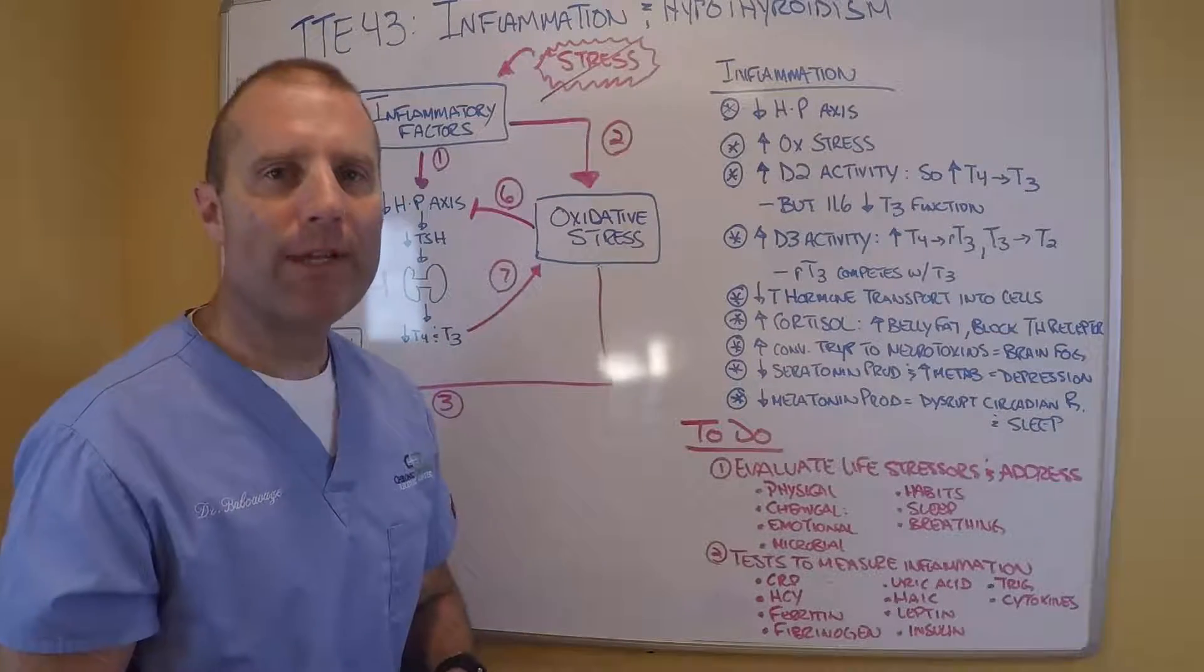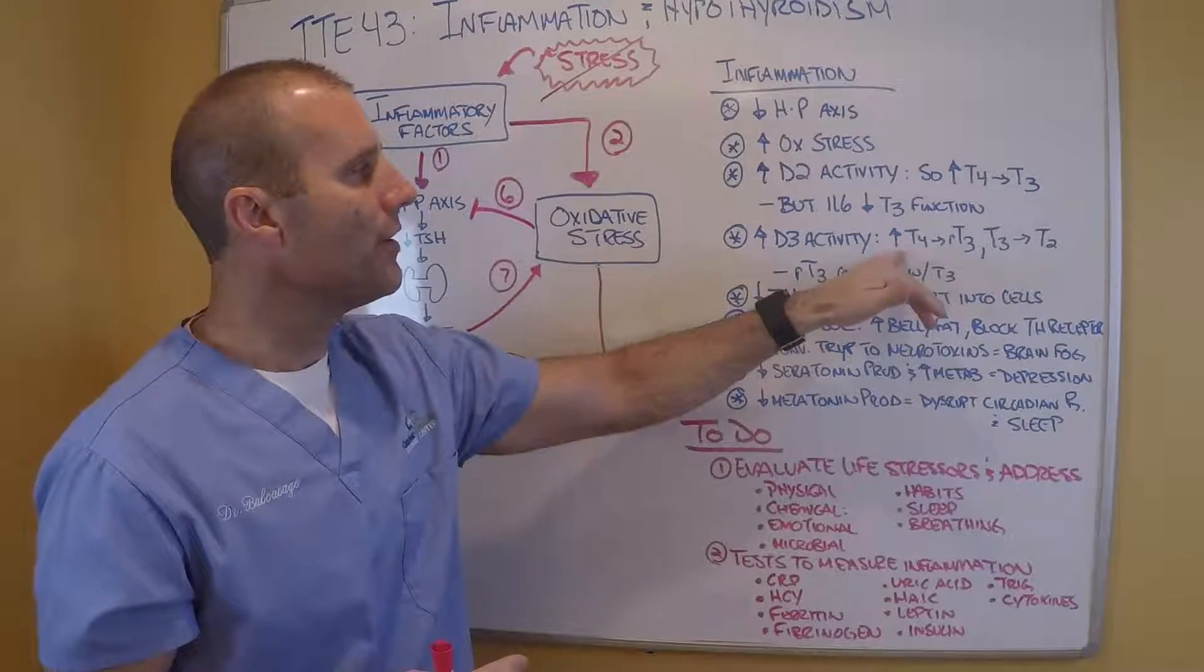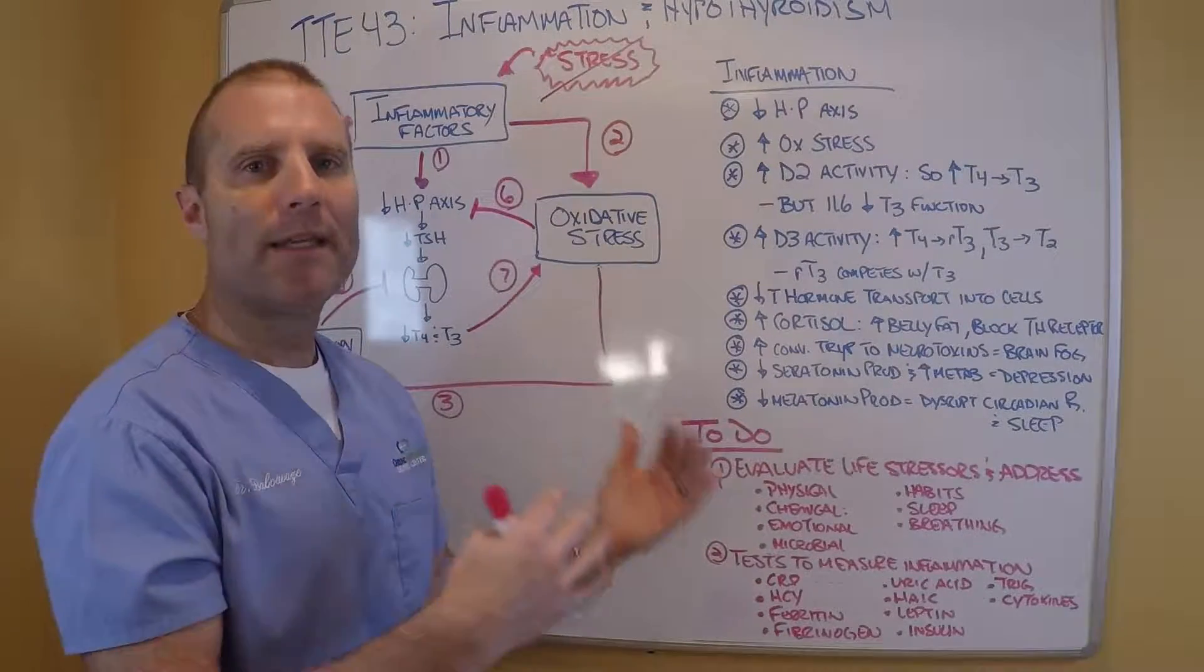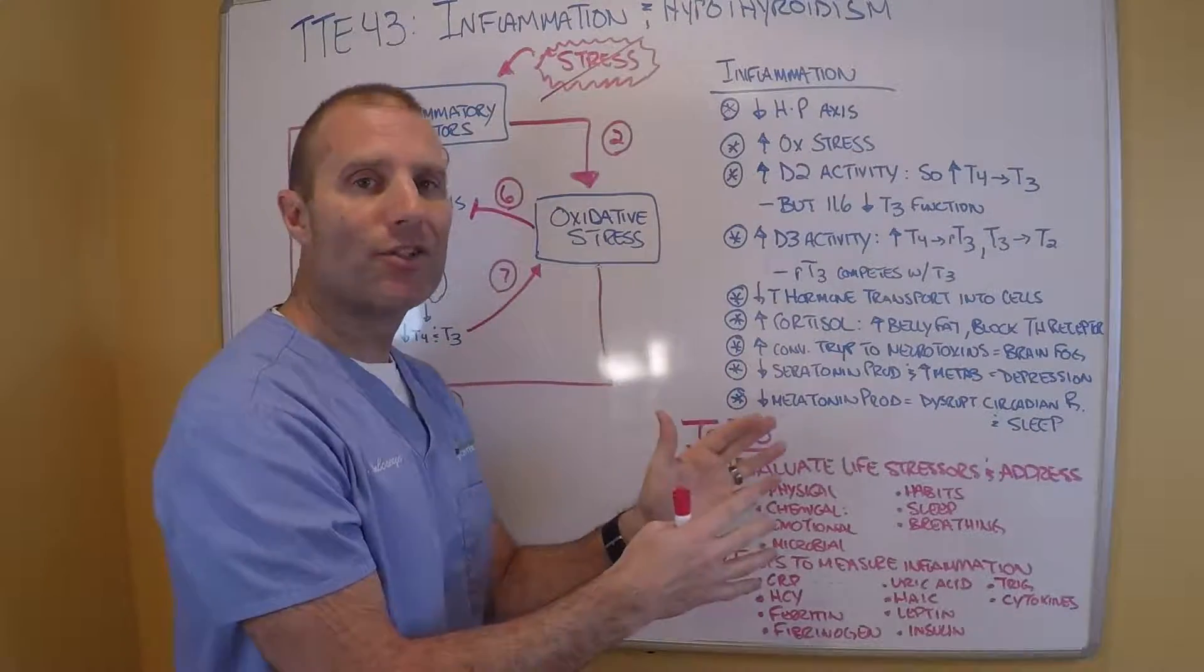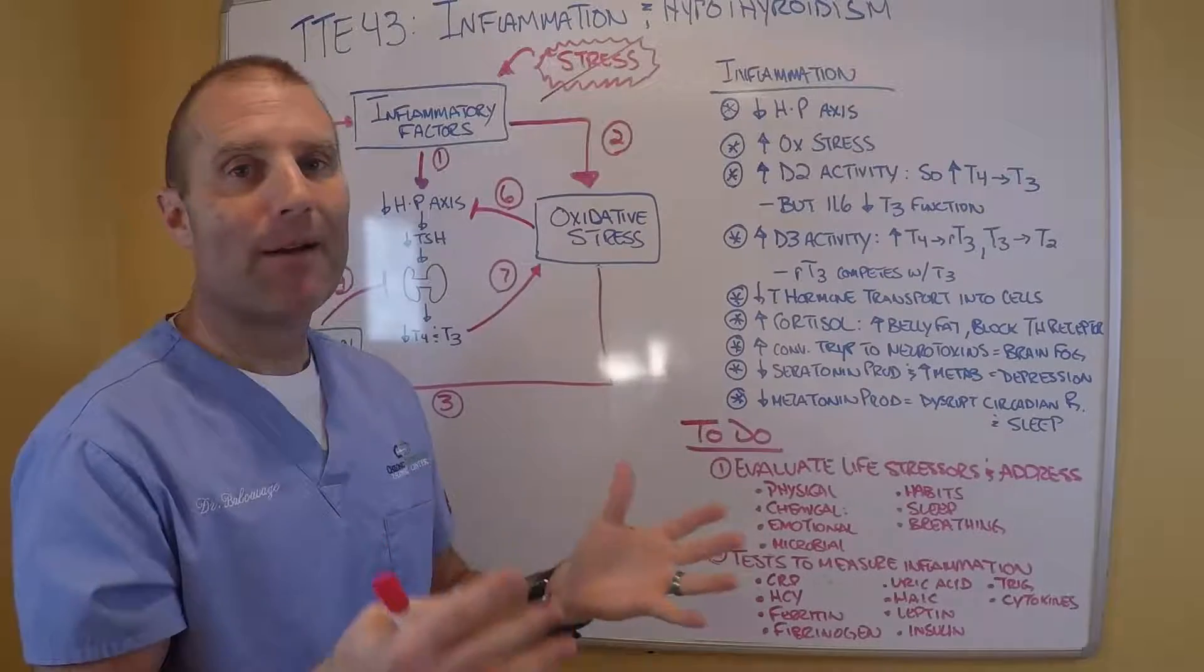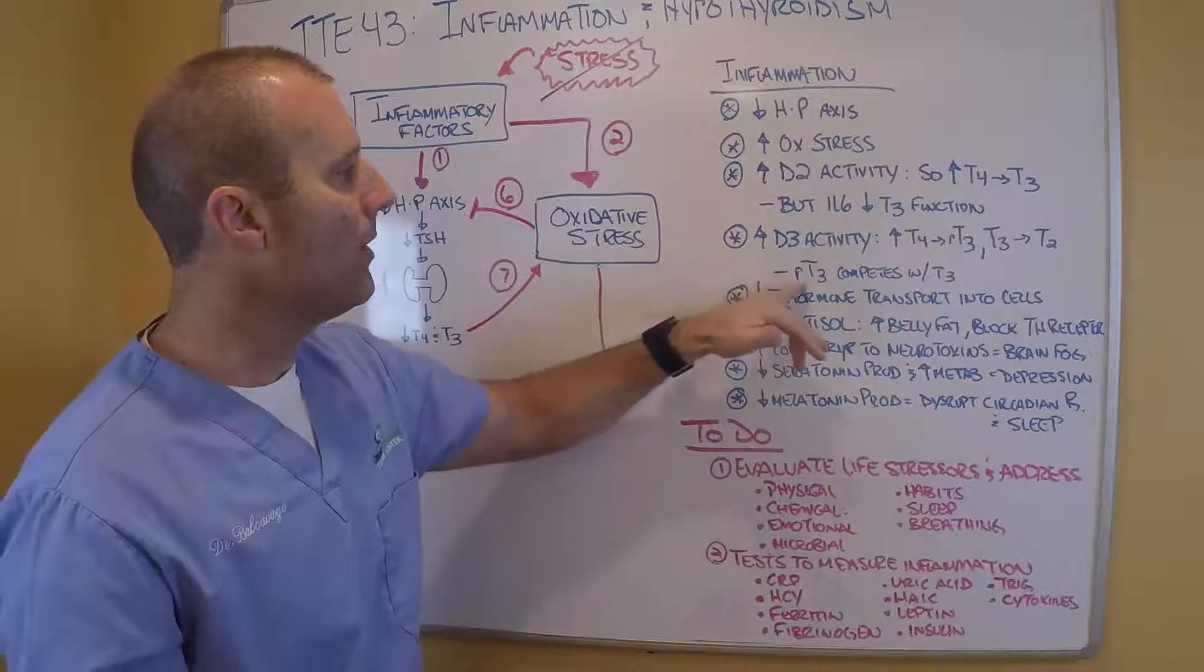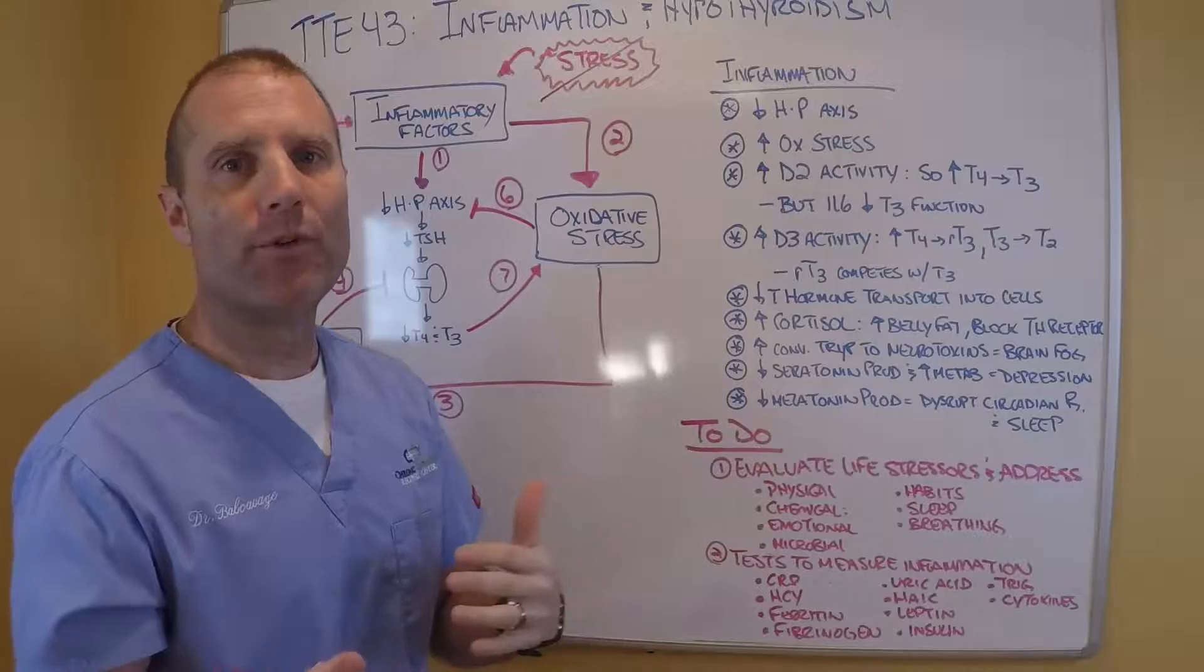Inflammation increases D3 activity, and D3 activity is primarily in the peripheral tissues. The pituitary gland doesn't have D3. So D3 in the peripheral tissues increases T4 conversion to reverse T3 and converts T3 into T2. Now both of these are inactive forms. So during this inflammatory state, we're making more T4 to T3, but we're also making more T4 into reverse T3, which actually competes with T3 for binding sites. So if I'm making more reverse T3, I'm going to limit the amount of T3 that can actually bind to the receptors and stimulate your metabolism.